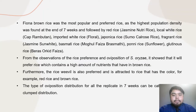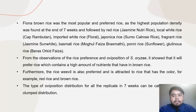In conclusion, based on several weeks of experiment, it can be concluded that Sitophilus oryzae exhibits habitual movement behavior. Brown rice was the most popular and preferred rice, as the highest proportionality was found at the end of several weeks, followed by red rice, local white rice, imported white rice, japonica rice, fragrant rice, basmati rice, pony rice, and glutinous rice. From the observation of rice preference and oviposition of Sitophilus oryzae, it shows that they prefer rice which contains a high amount of nutrients, as found in brown rice. Furthermore, the rice weevil is also attracted to rice that has color, for example red rice and brown rice.